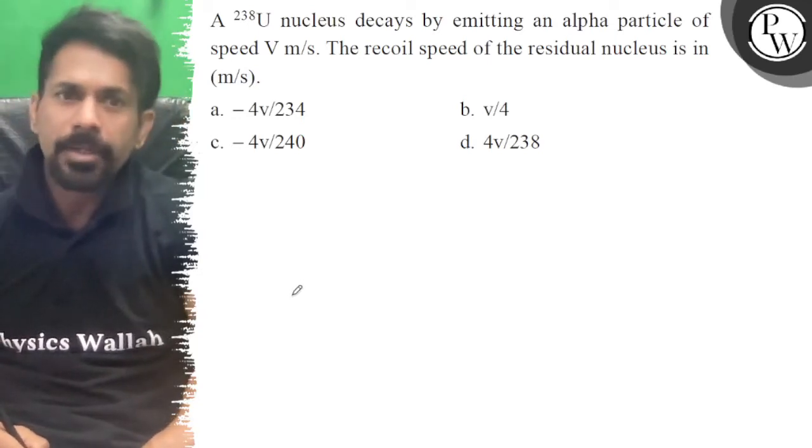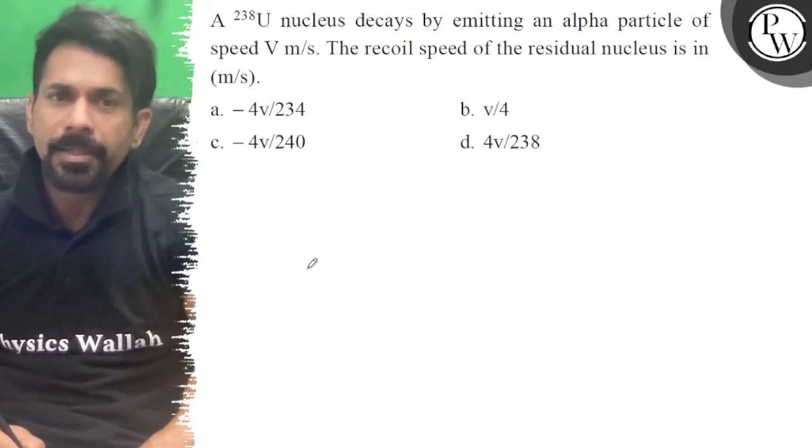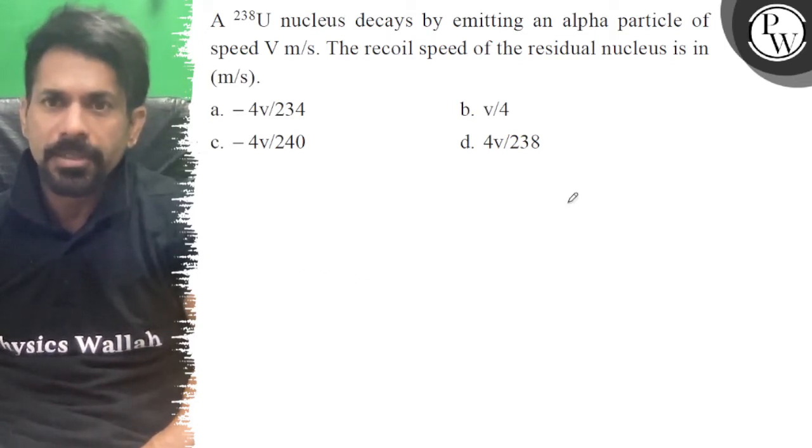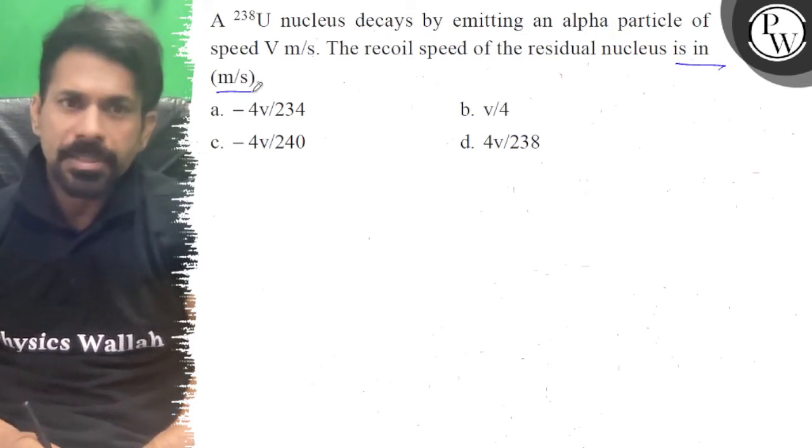Hello, let's see the question. Uranium-238 nucleus decays by emitting an alpha particle of speed v meter per second. The recoil speed of the residual nucleus is in meter per second.